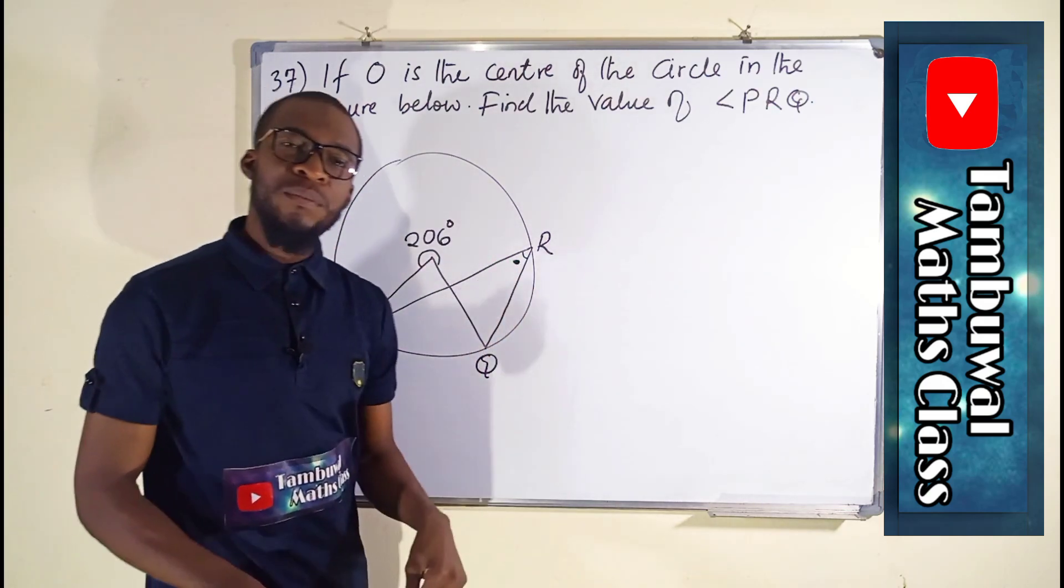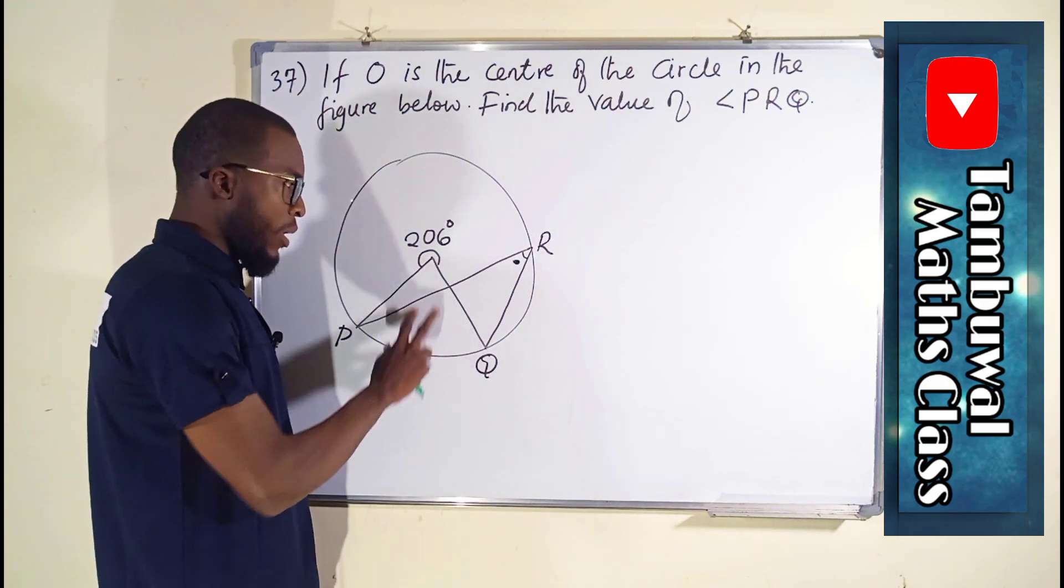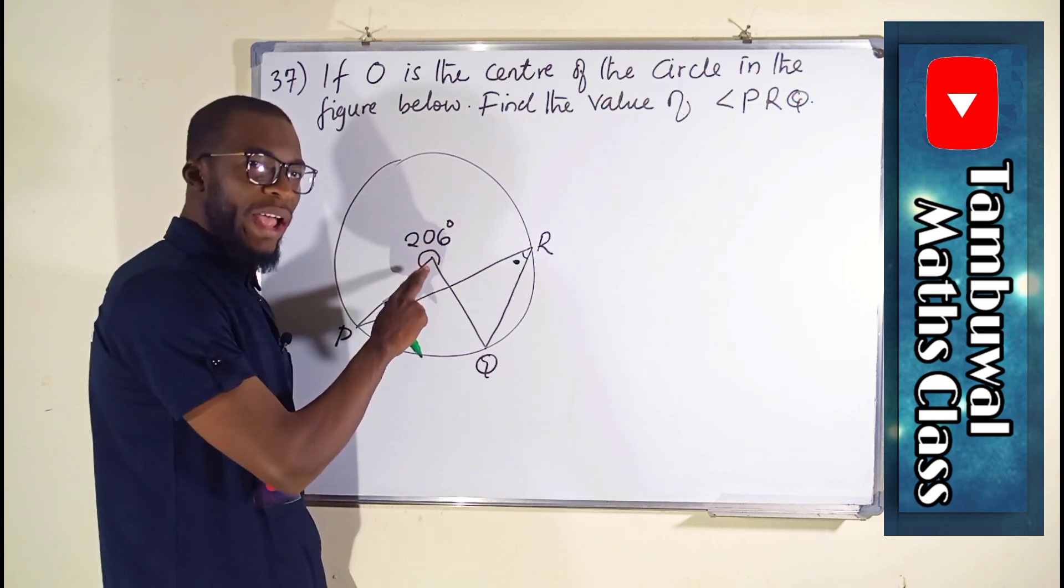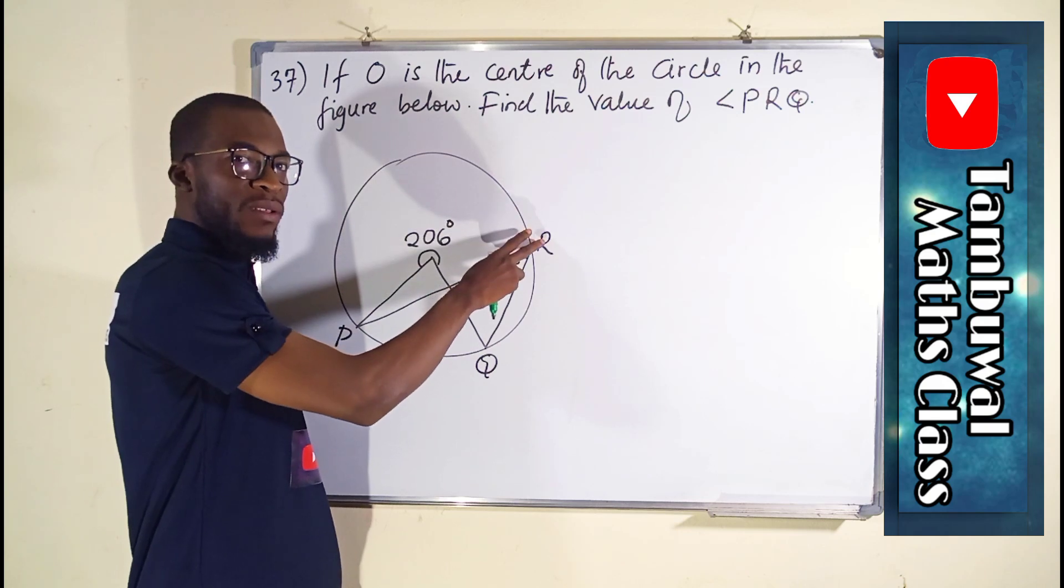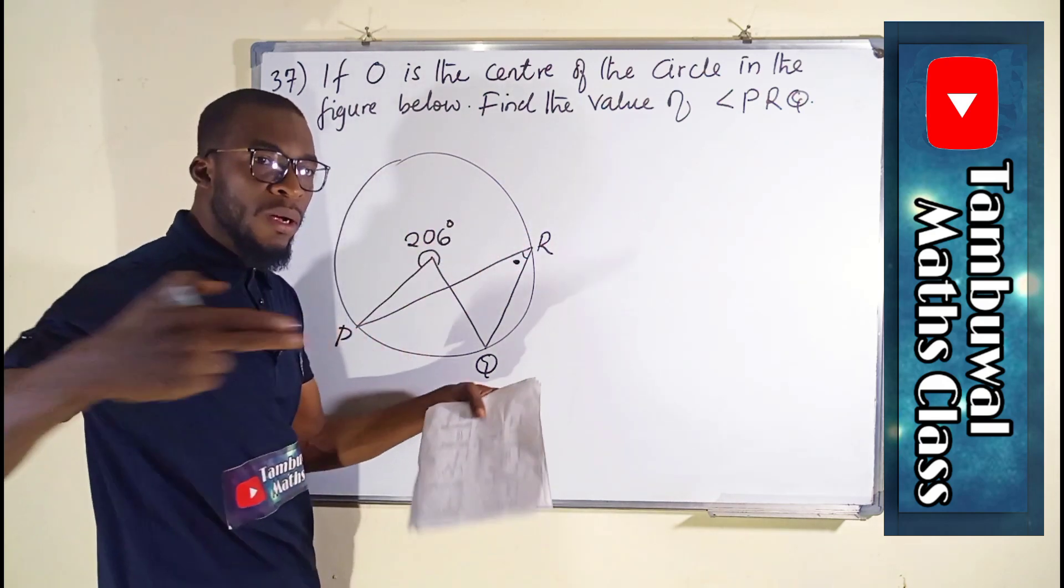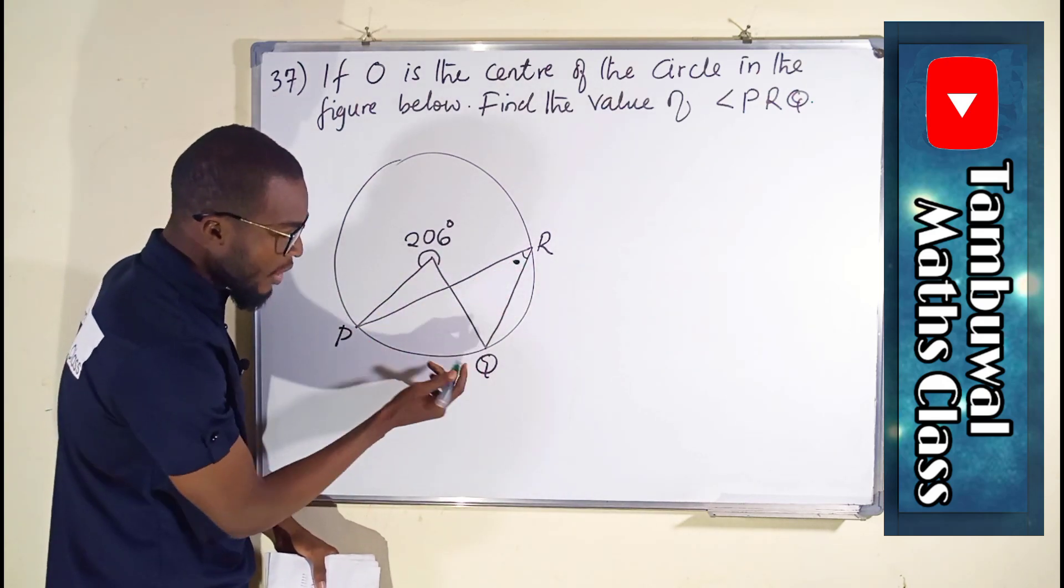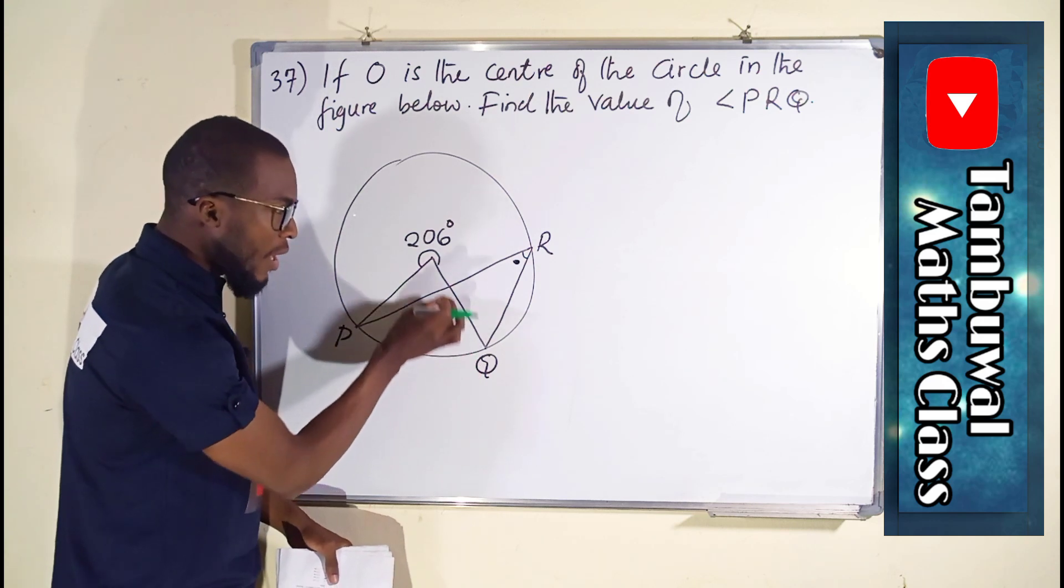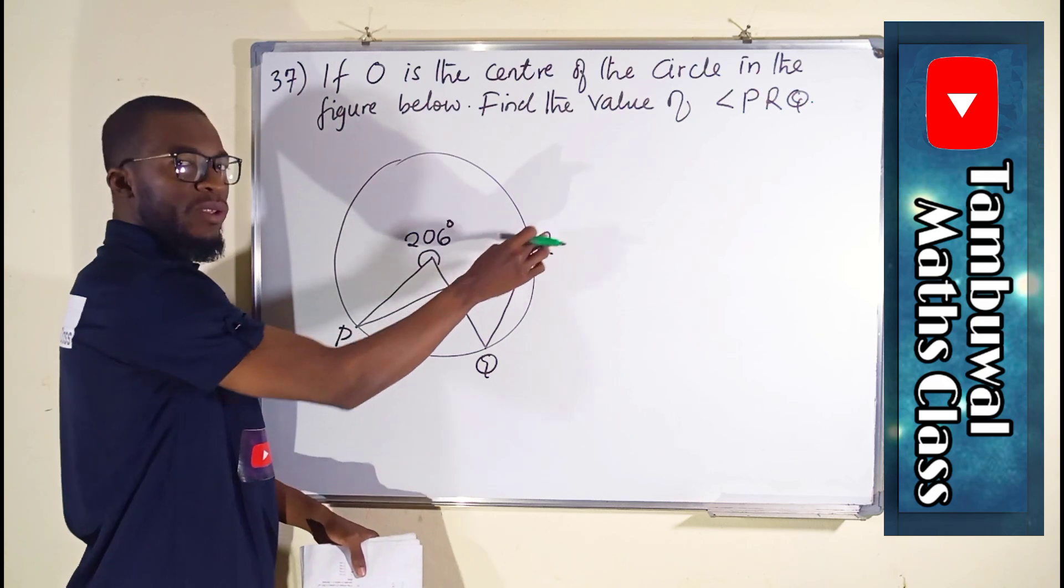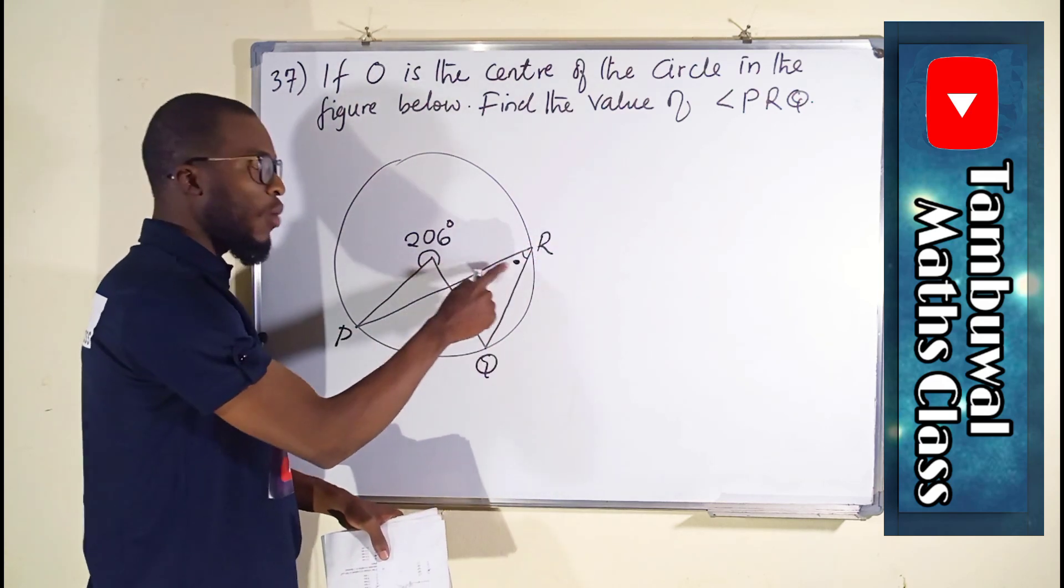From circle theorem, it says that the angle formed at the center is twice the angle formed at the circumference, if and only if the two angles are formed from the same arc. You can see this angle and this angle have the same arc, PQ. This arc forms an angle to the center, and equally it forms another one to the circumference. So the law says this angle formed here is twice this angle.